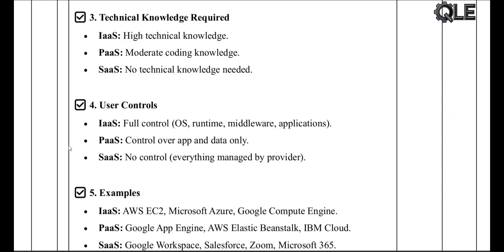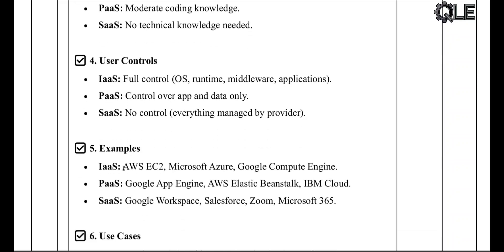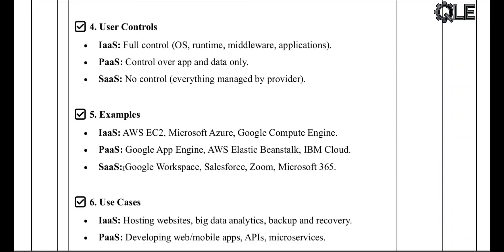What do you control? With IaaS you have full control: OS, apps, middleware, everything. With PaaS you only control your app and data. With SaaS you have no control — everything is handled by the provider.